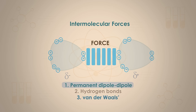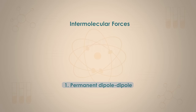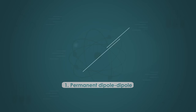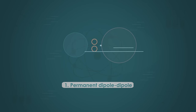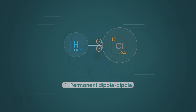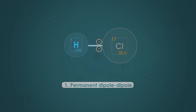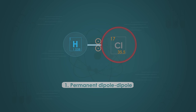First up are permanent dipole-dipole forces. A polar molecule is one in which there is a permanent dipole, arising usually because the different atoms in the molecule have different electronegativities — the attraction by a bonded atom for the pair of electrons in a covalent bond. Let us take hydrogen chloride as an example. Hydrogen chloride is a polar molecule, as the pair of electrons in the hydrogen-chlorine bond are nearer to the chlorine atom; in other words, they tend to one pole. The chlorine atom has a stronger attraction to the electrons because it has a greater electronegativity than the hydrogen atom.